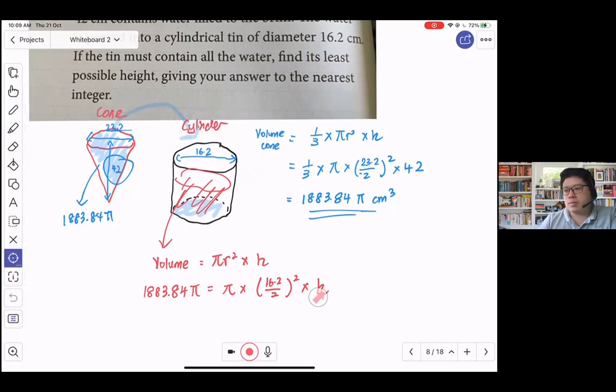Find the least possible height. So in order for me to contain all the water without overflowing, this height has to have a certain lower bound. So my height must be at least this amount in order to contain. This is the lowest possible. My height can be higher, but here I minimally would need this height in order such that my volume of the tin is able to contain all the volume of the water coming from the cone.